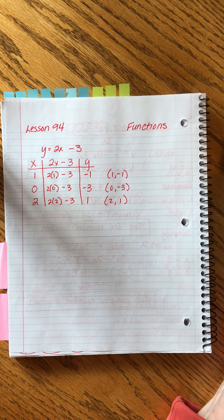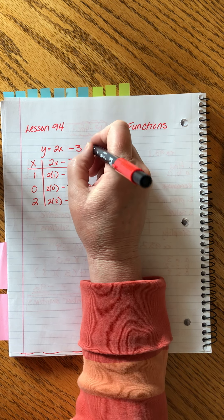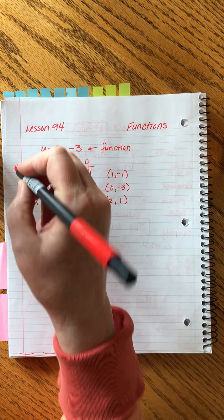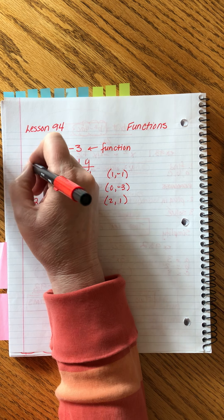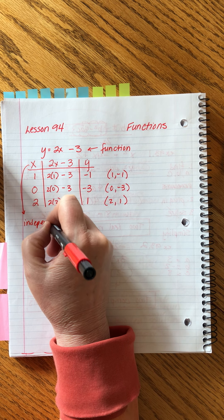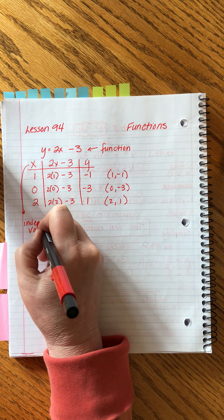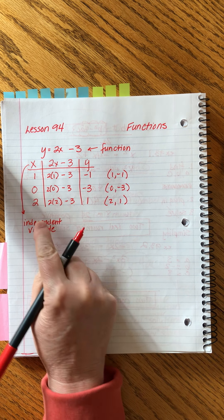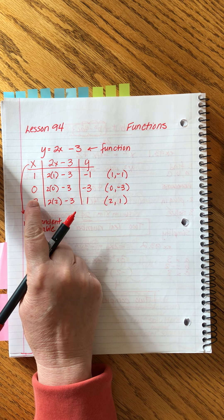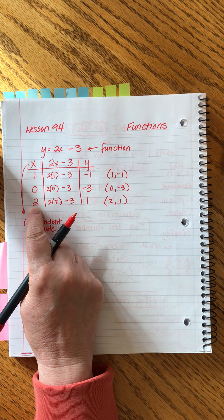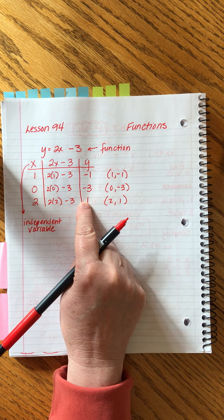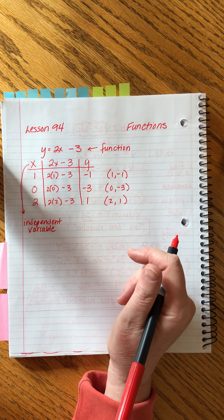So, this is all that a function is. We can call this a function. And we call x the independent variable. That sounds really fancy. But if you think about it, independent means we can choose whatever we want to plug in there. And that's exactly what we did. There was no right or wrong number to choose. I could have put in 57 and negative 124. It would have been fine. We could have calculated the right answer. I just chose little numbers because they're easier.